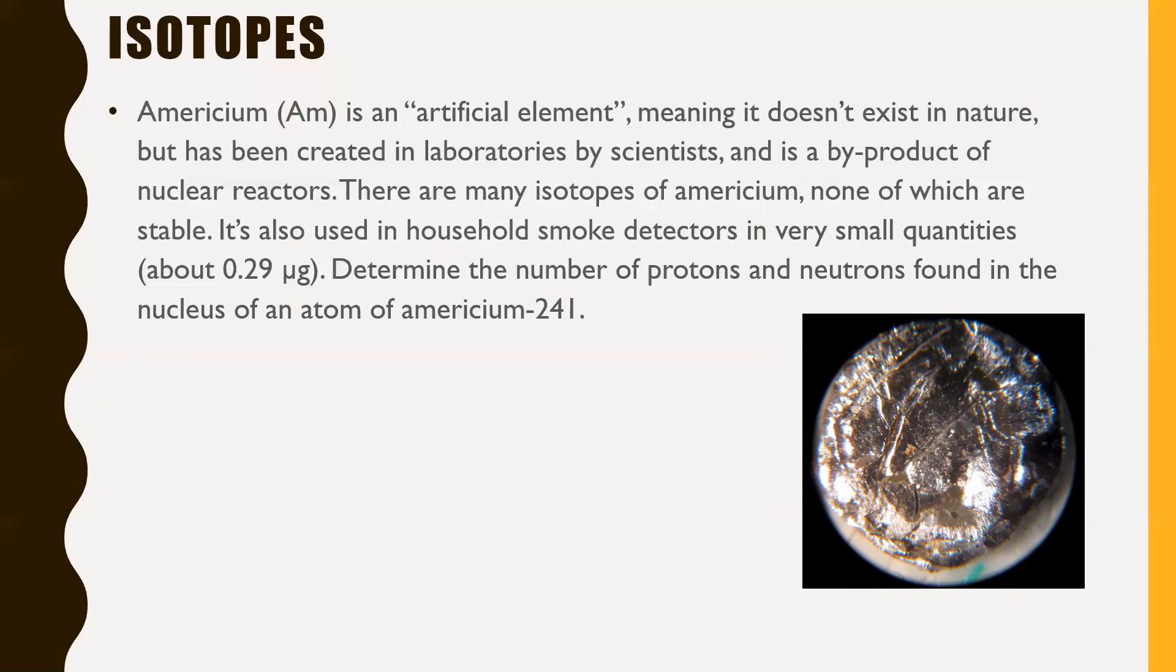There are many isotopes of Americium. None of which are stable. It's also used in household smoke detectors. This is actually news to me. I didn't know this. And believe me, I'll tell you a story in just a second here. In household smoke detectors, there's a little bit of this stuff. So products of a nuclear reactor in very small quantities, which is about 0.29 micrograms. So very, very little. Apparently, if you took apart a smoke detector, there's like a little capsule in there that has a radioactive sign on it. Yeah, there's serious business right there. That's what that is. Now determine the number of protons and neutrons found in the nucleus of an atom of Americium-241, right? So this is what you're really focusing in on. You will need to use your periodic table on your formula sheet. Give this one a try.